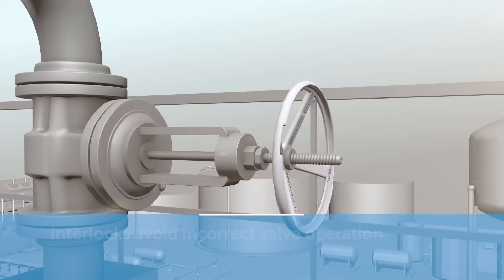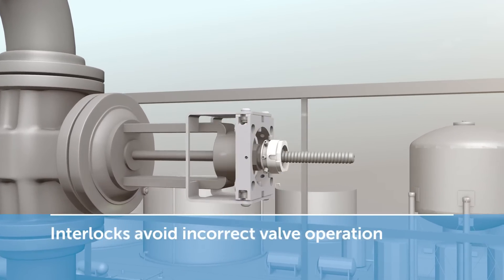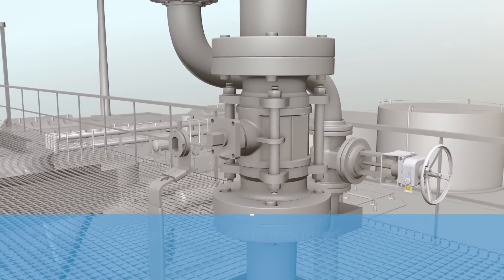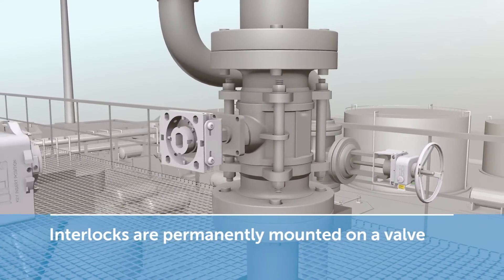Valve interlocks are used to avoid incorrect valve operation. They are permanently mounted on top of a valve with a custom-made bracket and adapter.